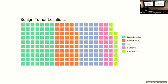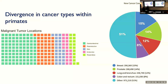If we look at just benign tumors — taking out the full malignant tumors — you have a very similar representation, meaning the most common benign tumors in our primate dataset reflect pretty well on the most common malignancies seen in primates. This is slightly different from humans, where we have a lot of very common human neoplasias that are just permanently benign, never progress into full cancers, and aren't necessarily reflective of the common cancer types in humans.